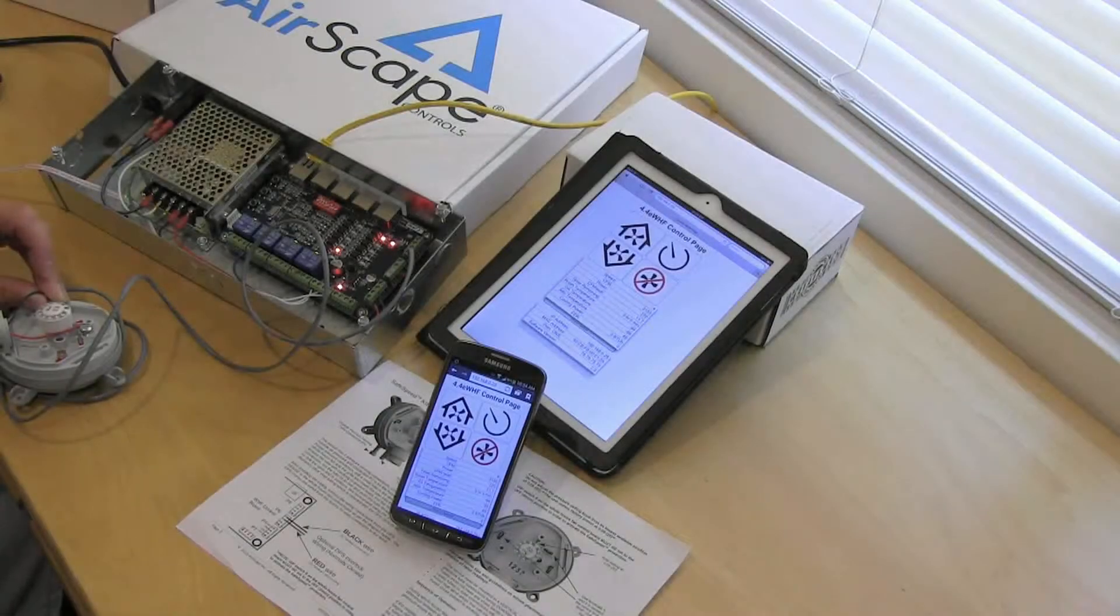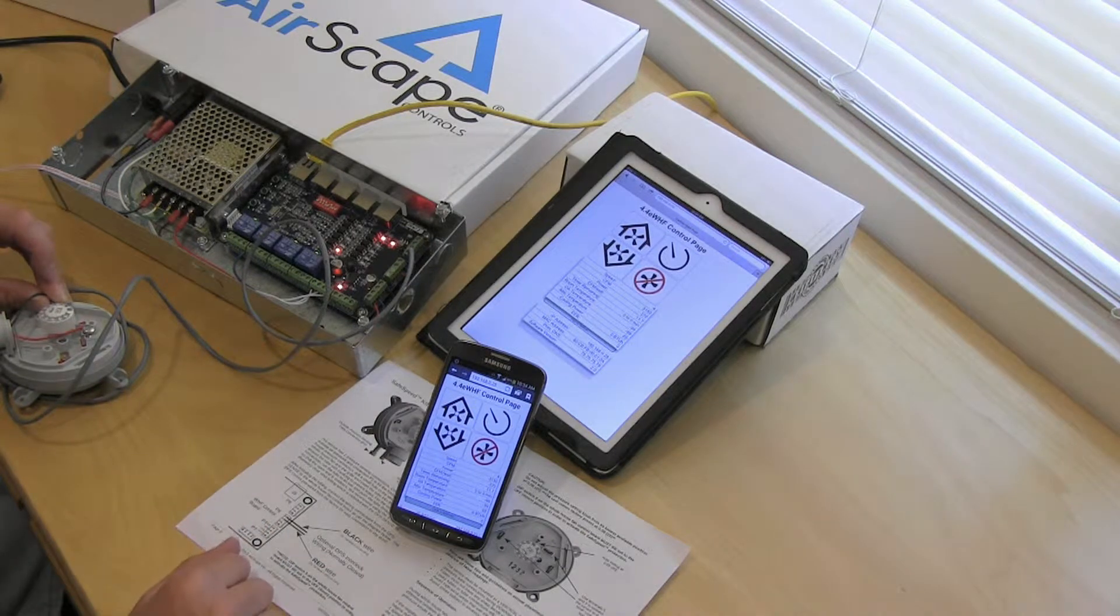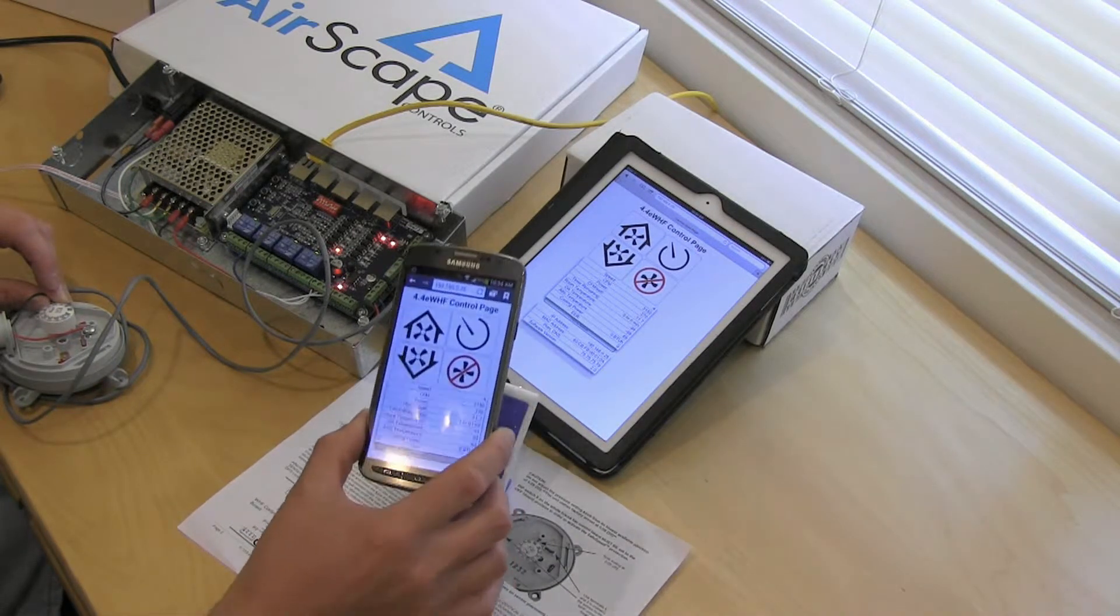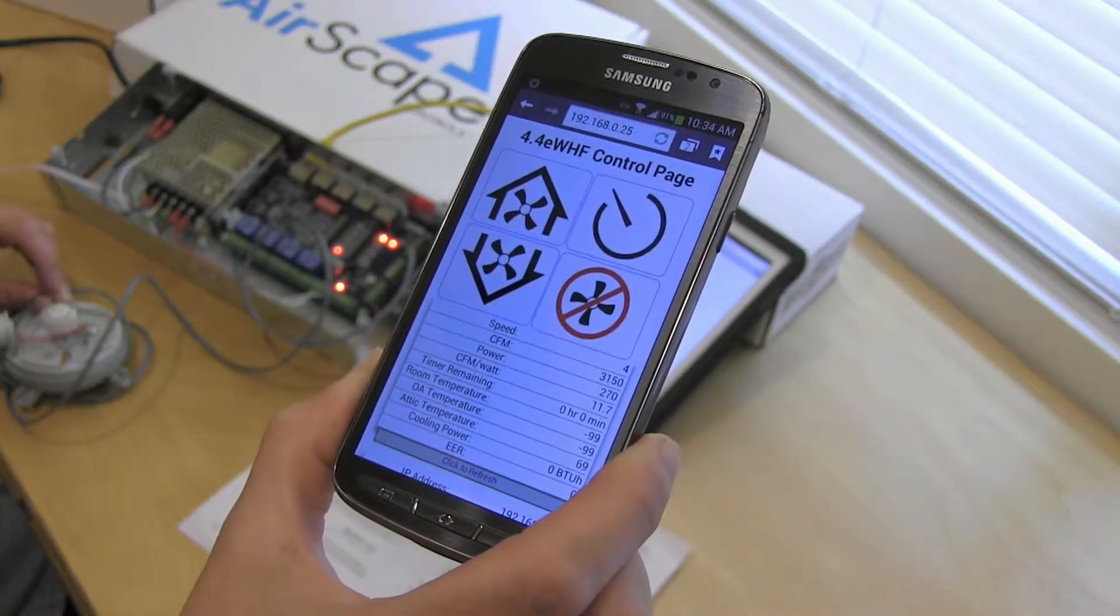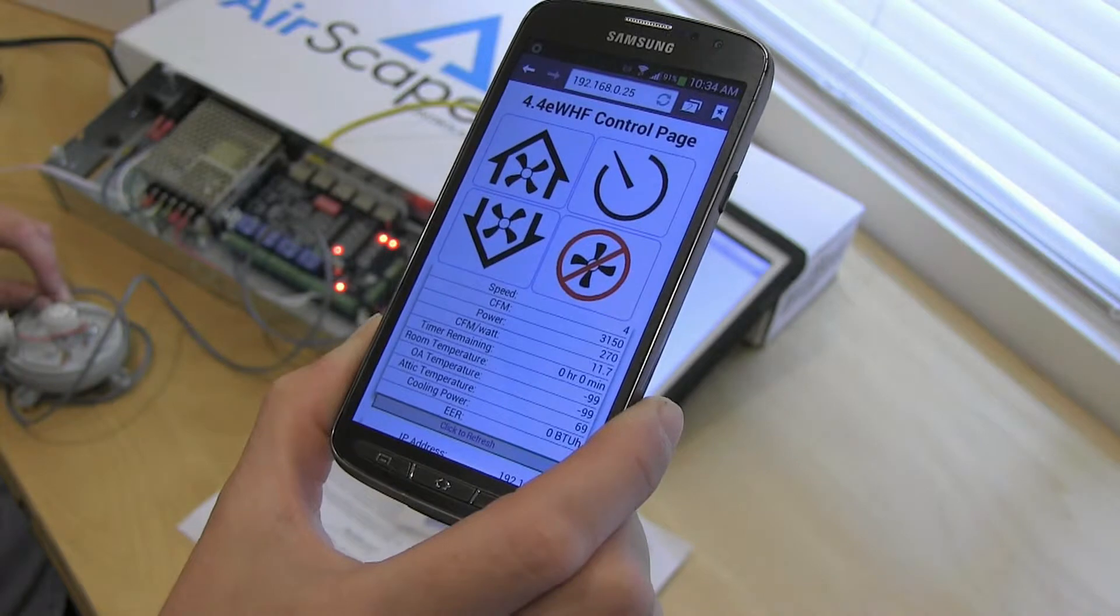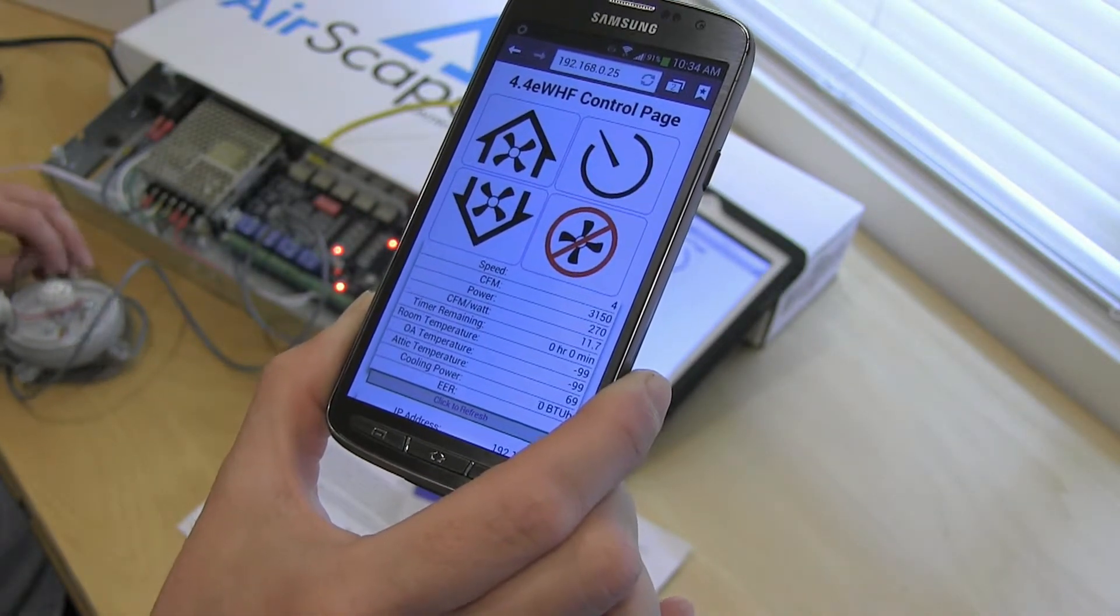So let's go ahead and see how the SafeSpeed actually works. I have a demo controller here with a SafeSpeed control package attached. And here is my web interface. You have a 4.4E fan running at speed number 4 right now and I'm going to go ahead and simulate low pressure within the house or high negative pressure.